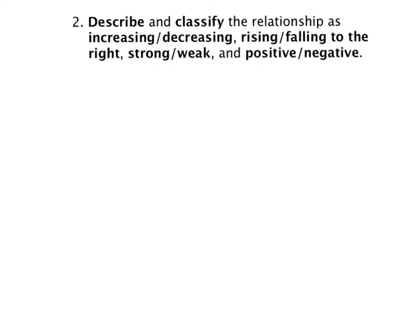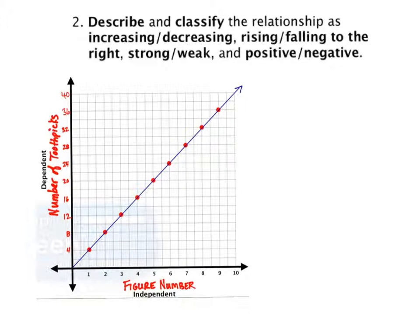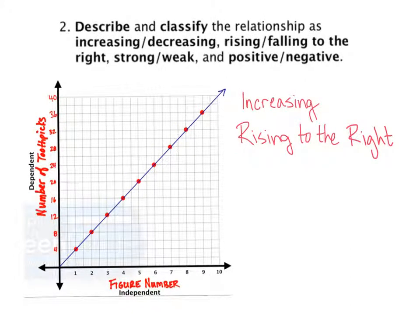Question number two asks us to describe and classify the relationship. Looking back to the graph we can see that because it is going up to the right, we would say this is an increasing graph. It's rising to the right, it's also a perfect linear relationship, and it is a positive relationship.